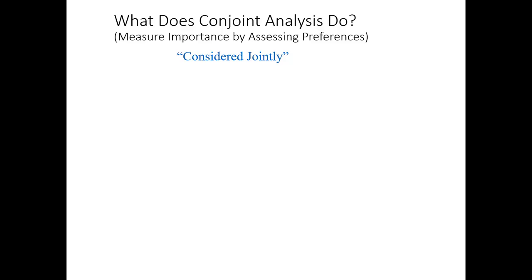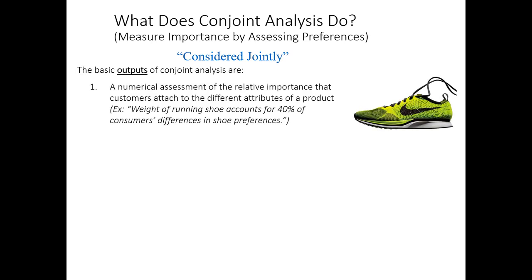So what exactly does conjoint analysis do? First of all, conjoint is a portmanteau for 'considered jointly,' and it's the output of a conjoint analysis that really interests a marketer. There are two basic outputs that we utilize to make all sorts of interesting market predictions. For each individual person participating in the conjoint study, we'll have a numerical assessment of the relative importance that they attach to the different attributes of a product.